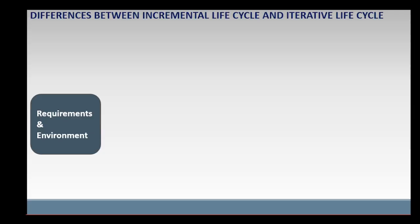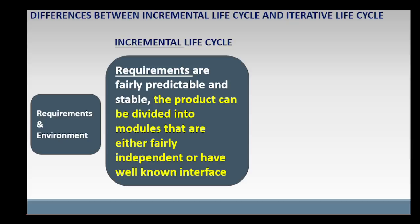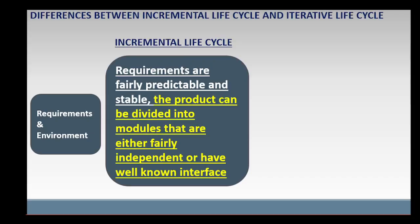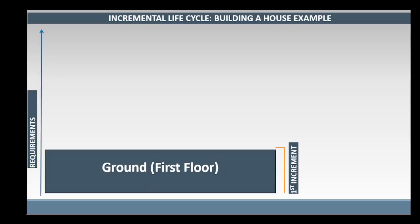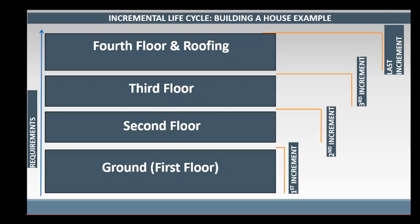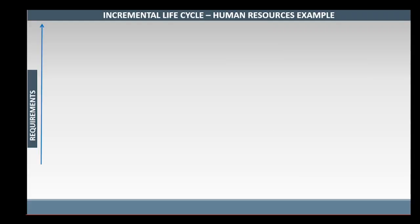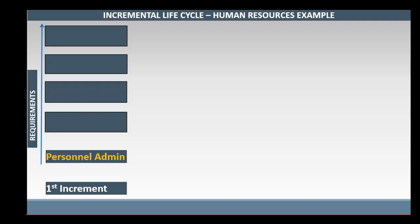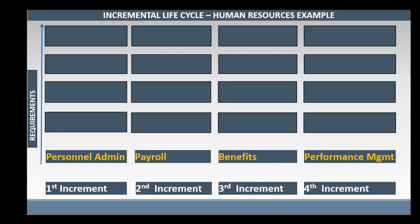Incremental life cycle is different from iterative life cycle in terms of requirements and environment. In incremental project life cycle, at least the environment and the initial requirements are predictable and stable, and the product can be divided into modules, increments, or sections that are either fairly independent or have well-known interfaces. For example, a four-floor housing project can be divided into increments such as ground or first floor, second floor, third floor, fourth floor, and roofing. Human resource software development can be divided into increments such as personnel administration, payroll, benefits, and performance management.